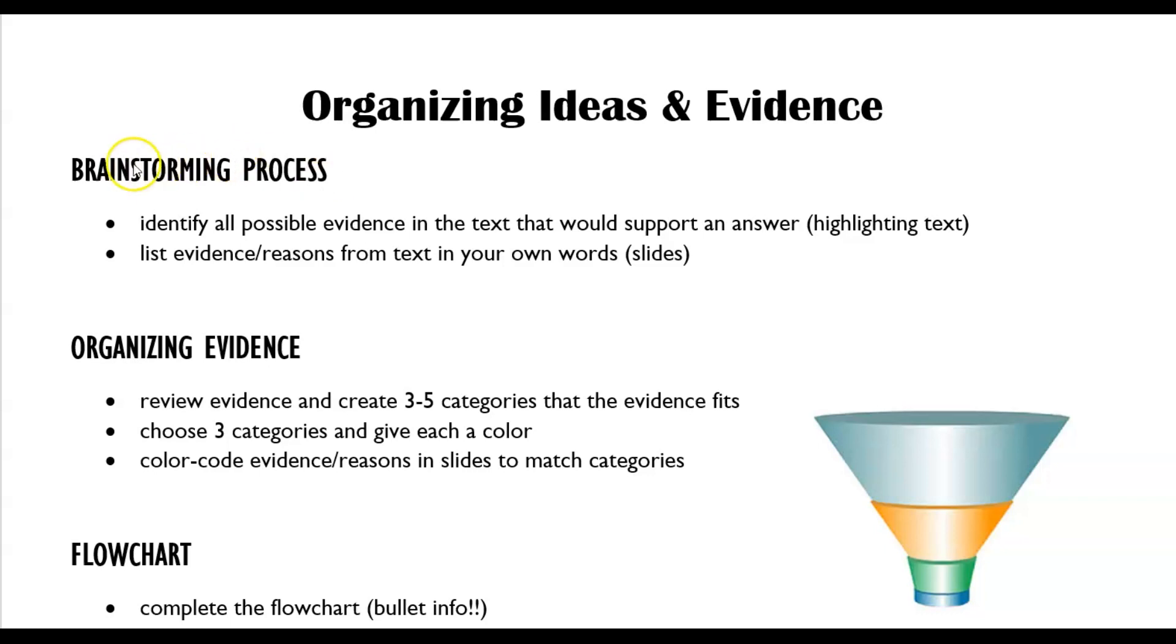So the first thing you do is the brainstorming process. We've done that. You identify all possible evidence in the text that would support your answer. Why should school start early? You highlight it and then you list it out in your own words, which is what we've done on the slides. Notice I say all possible. We don't judge. At this point, this is the widest opening of our funnel. We want absolutely everything that could be used to support why schools should change their start times and start later. But at first, you don't want to do that. You don't want to leave anything out. Just list everything.